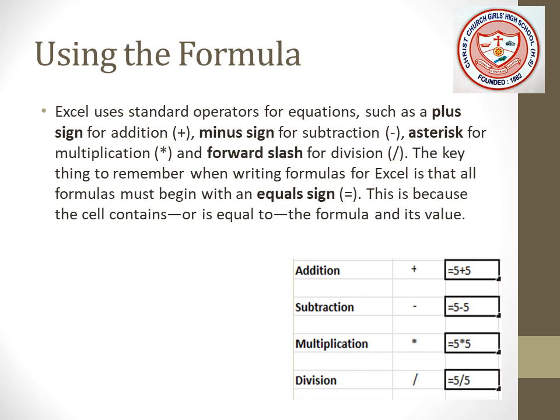The key thing to remember when writing formulas for Excel is that all formulas must begin with an equal sign. When we write the formula, we start with the equal sign. As you can see in the picture, the equal sign is followed by 5 plus 5 for addition.